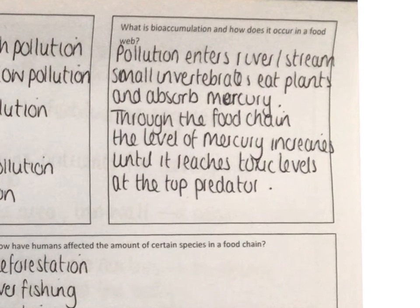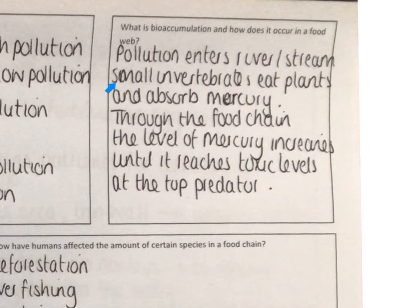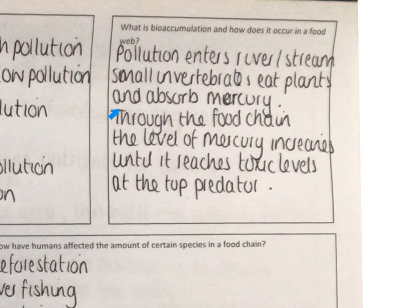What is bioaccumulation, and how does it occur in a food web? The pollution — normally mercury from factories — enters a river or stream. Small invertebrates eat plants that have absorbed the mercury. The invertebrates will eat one or two plants, so they have a slightly higher amount of mercury inside them. Then secondary consumers come and eat the invertebrates, eating more than one, so the level of mercury increases throughout the food chain until it reaches toxic levels at the top predator. The top consumer has the highest amount of mercury, which can be toxic and could even cause death to the organism.